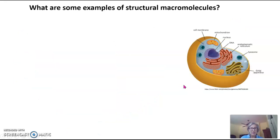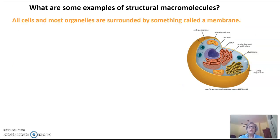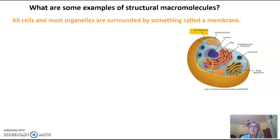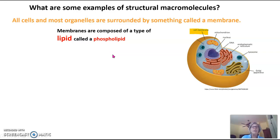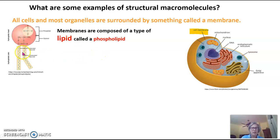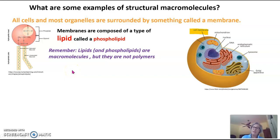What are some examples of structural macromolecules? All cells and most organelles are surrounded by a membrane, indicated here in orange in this picture of the cell. This cell membrane surrounds the entire cell, and there's also a membrane surrounding each of the labeled organelles — the nucleus, the mitochondria, and the Golgi apparatus. These membranes are composed of a type of lipid called a phospholipid, pictured here on the left. Remember, lipids and therefore phospholipids are macromolecules, but they're not polymers.